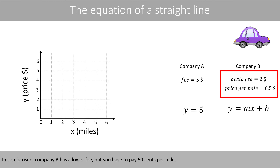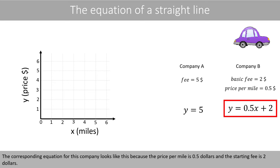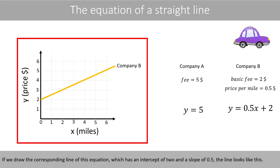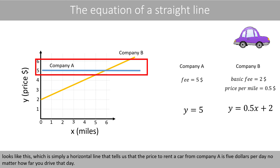Since the fee is 5 dollars, we can set B to 5. In comparison, Company B has a lower fee, but you have to pay 50 cents per mile. The corresponding equation for this company looks like this, because the price per mile is 0.5 dollars and the starting fee is 2 dollars. If you draw the corresponding line of this equation, which has an intercept of 2 and a slope of 0.5, the line looks like this. The corresponding line for Company A is simply a horizontal line that tells us the price is 5 dollars per day, no matter how far you drive.